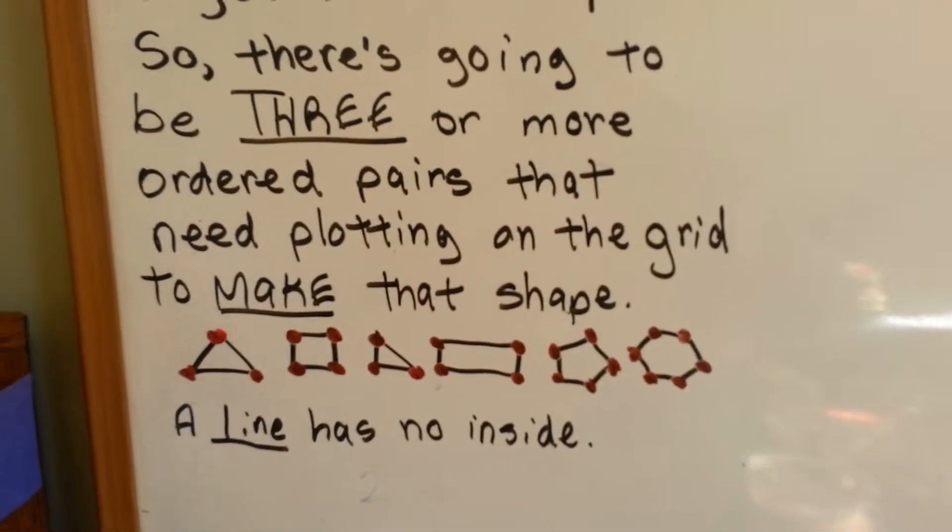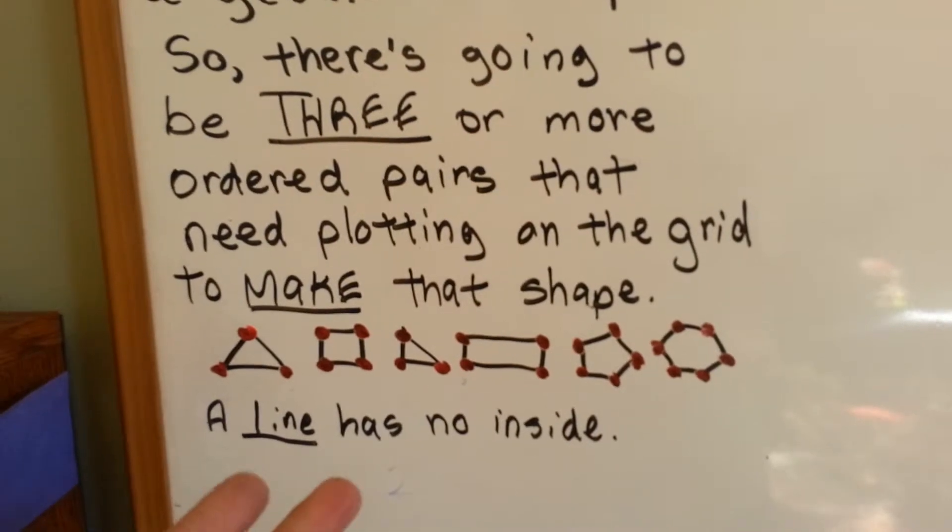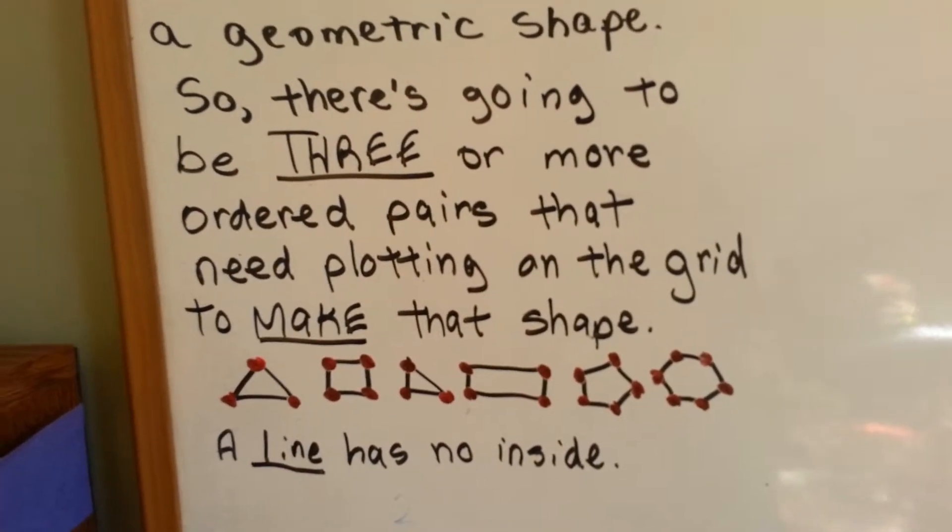A line has no inside, so you're not going to plot points for a line with two ordered pairs. There's going to be three or more ordered pairs that need to be plotted.